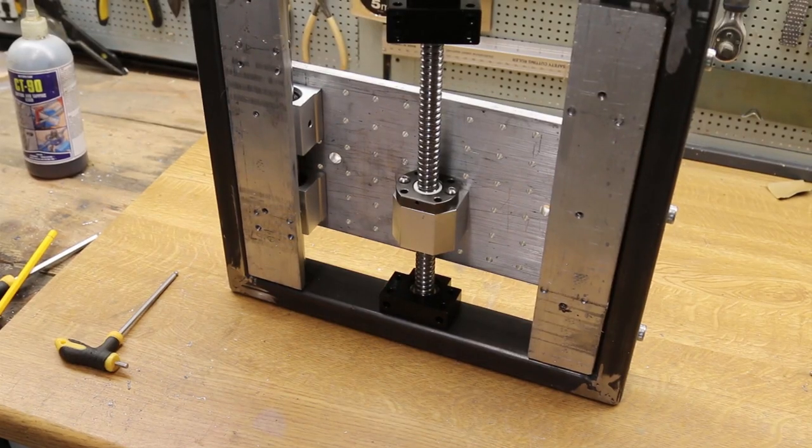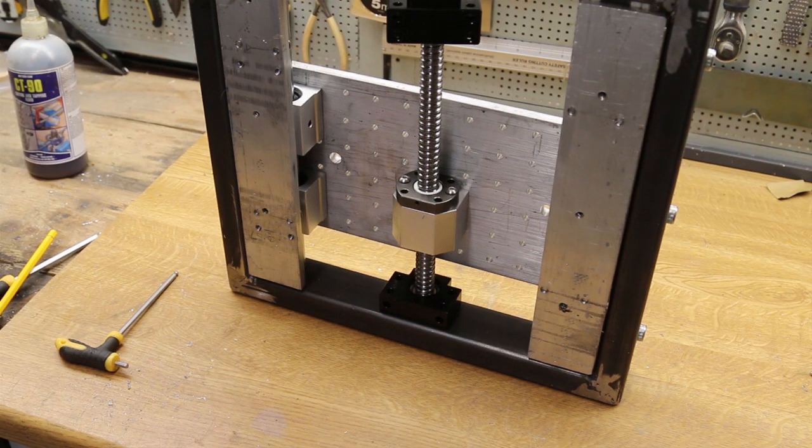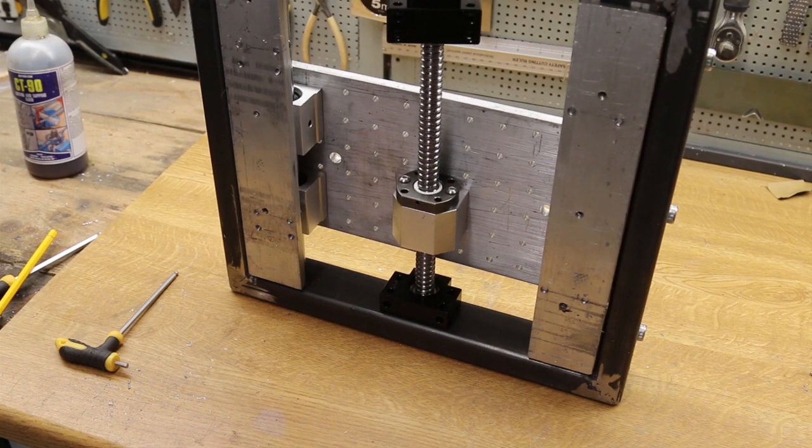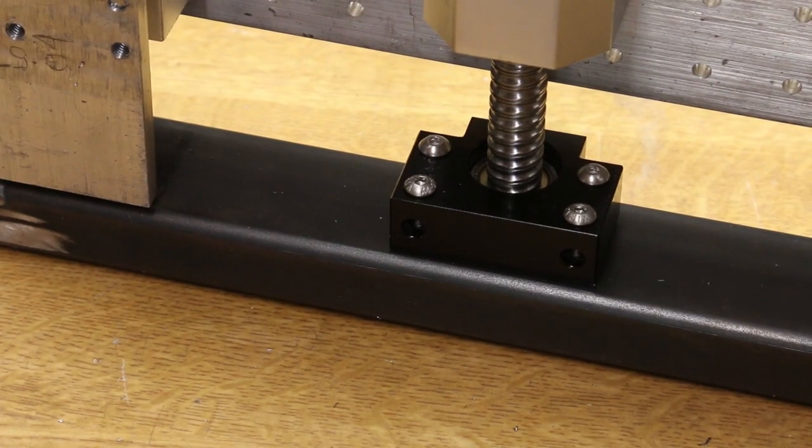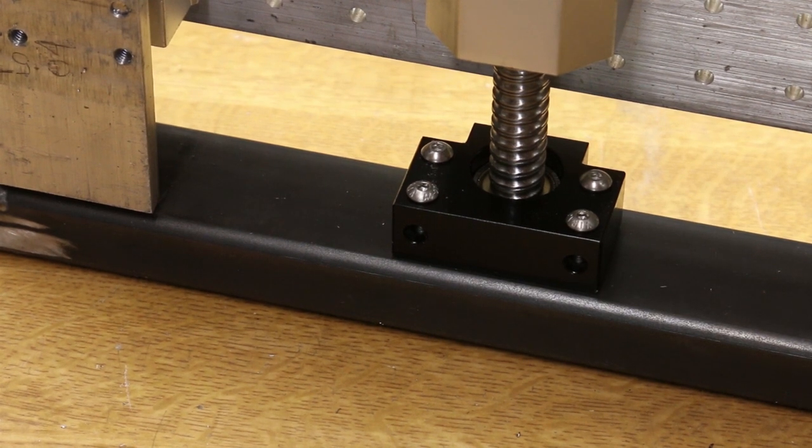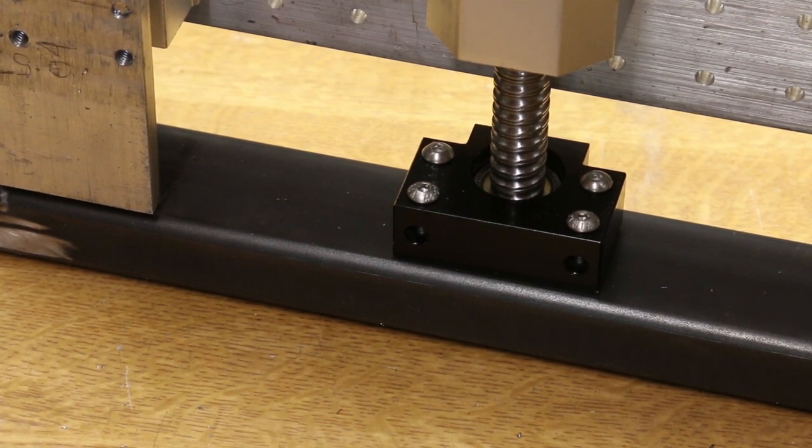With the ball screw bolted to the table, the mounting holes for the front bearing can be marked. The holes in the bearing blocks in this axis are 5.5 millimeters. So using 5 millimeter bolts gives a bit of latitude to get a smooth running.